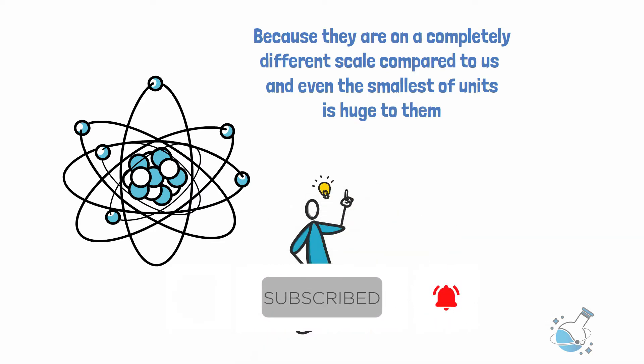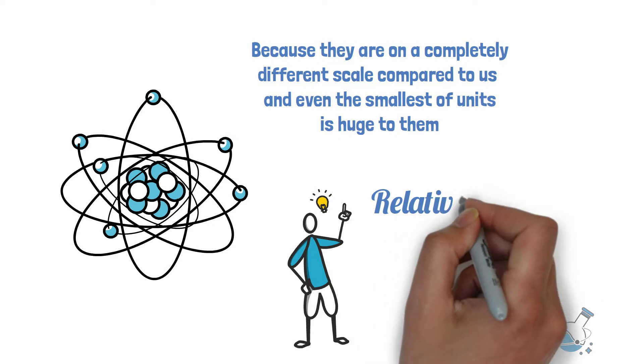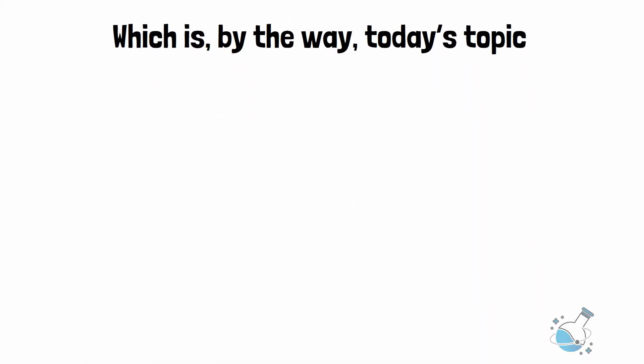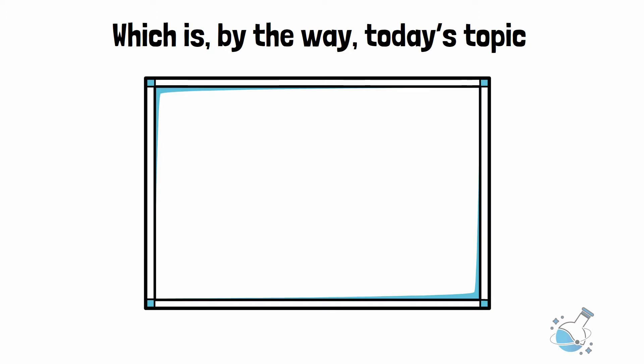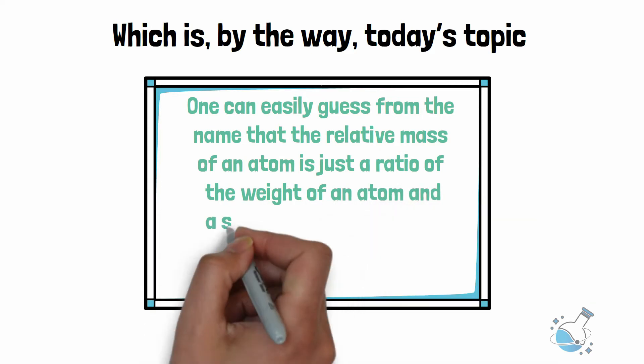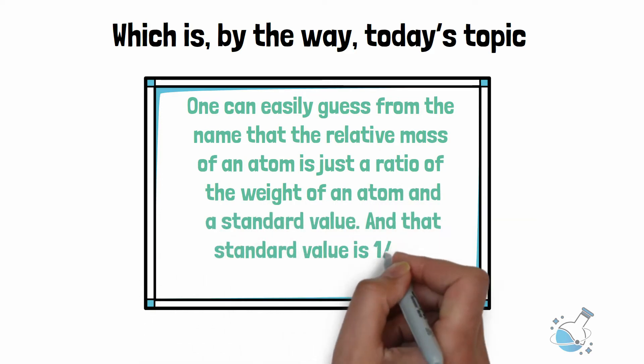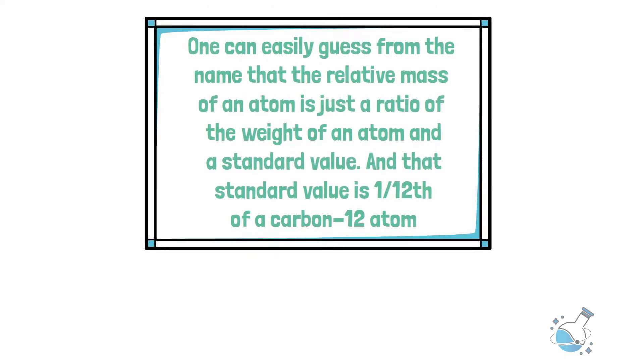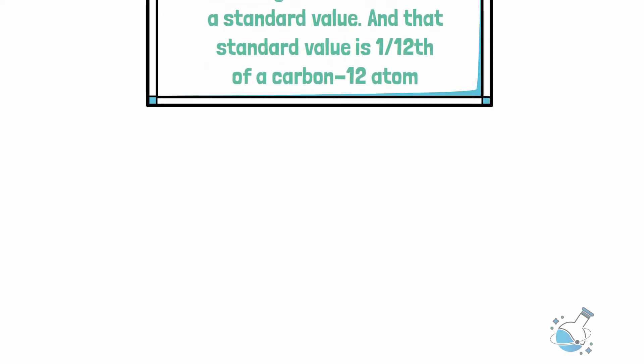One of the things scientists use to avoid this problem is the relative mass, which is by the way, today's topic. One can easily guess from the name that the relative mass of an atom is just a ratio of the weight of an atom and a standard value, and that standard value is 1/12th of a carbon-12 atom.